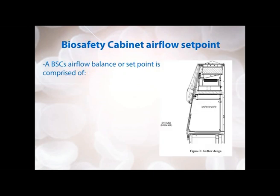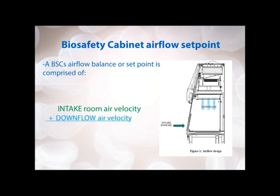In order to understand what intake air is, we're going to discuss the biosafety cabinet airflow set point. A BSC airflow balance or set point is comprised of two parts. First, you have the intake or room air coming in through the open front sash of the biosafety cabinet — so when you have the sash pulled up to its designated height, such as 8 inches, 10 inches, or 12 inches, and how much air is coming in through there.